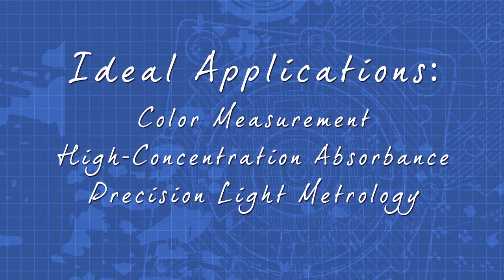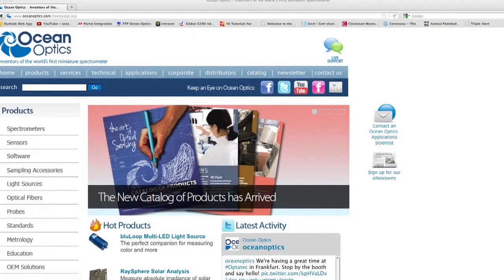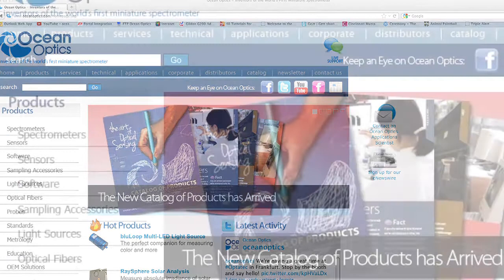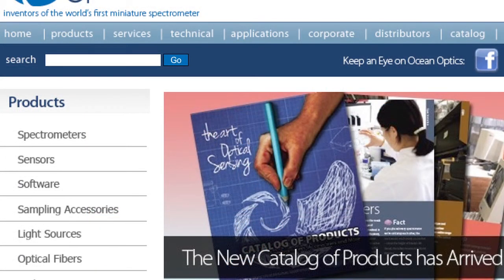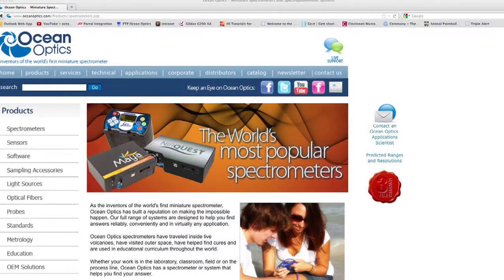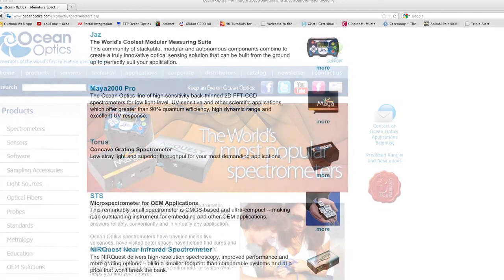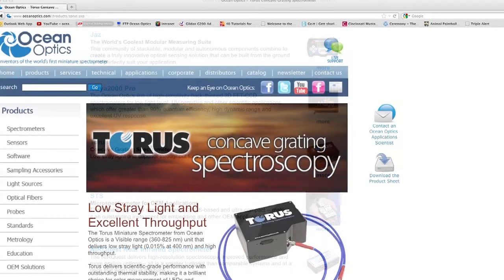and precision light metrology. Visit OceanOptics.com and click the spectrometers tab on the left hand side to get more information on Taurus and other miniature spectrometers from Ocean Optics.